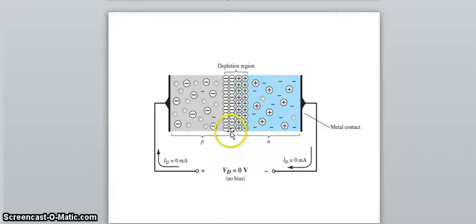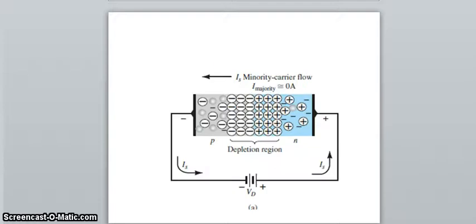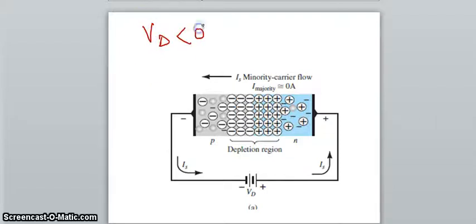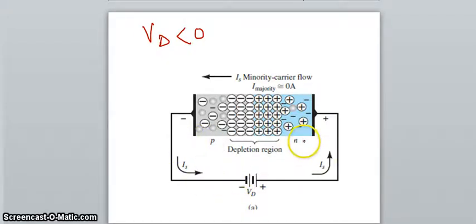Only immobile ions exist nearby these regions, and they form some sort of repulsion to further movement. These are the immobile negative ions in the p-type region and the immobile positive ions in the n-type region. Now, when we connect in reverse bias condition — that is, applying voltage less than 0V — p-type is connected to the negative of the battery and n-type is connected to the positive of the battery. This situation is referred to as reverse bias.